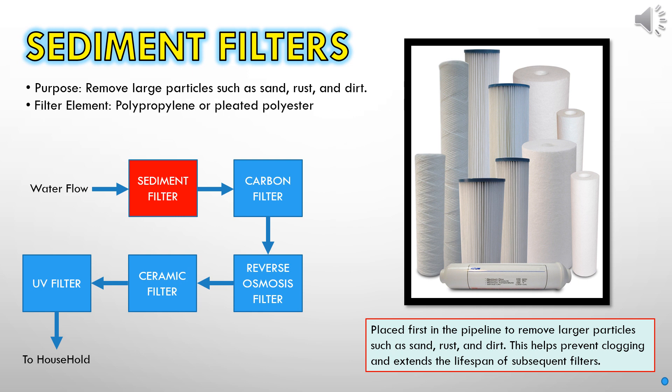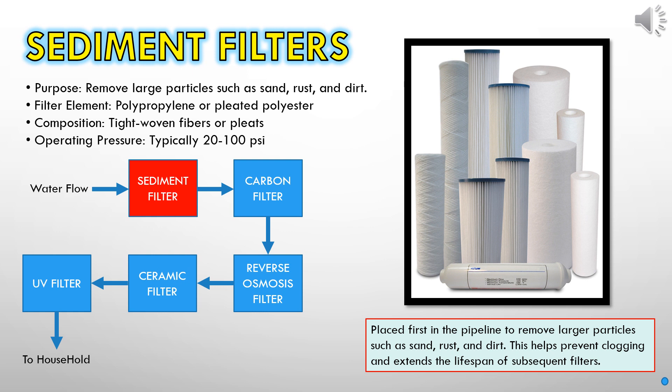The filter element commonly used for this task is crafted from either polypropylene or pleated polyester. These materials are chosen for their ability to trap contaminants effectively. The filter's composition consists of tightly woven fibers or pleats, providing a dense barrier to catch impurities. The operating pressure typically falls within the range of 20 to 100 pounds per square inch (psi), ensuring efficient filtration without compromising water flow.